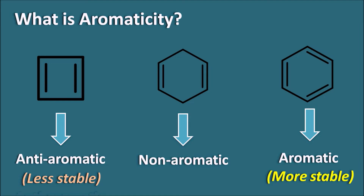In simple terms, if a compound is highly stable it is aromatic, and if it is very less stable it is anti-aromatic. Compounds which do not meet the criteria for aromaticity are simply called non-aromatic. In this video, let us see how we can identify whether a compound is aromatic, anti-aromatic, or non-aromatic.